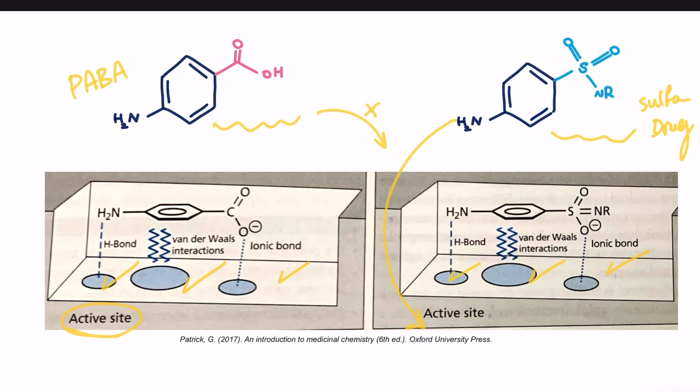Thus preventing PABA binding. As a result, the dihydropteroate is no longer synthesized. One might ask, what if sulfonamide quantity was not enough to compete and prevent PABA binding?